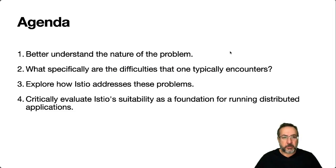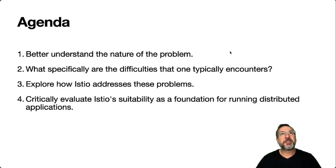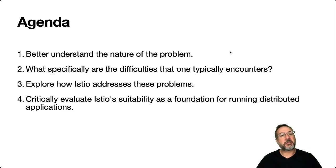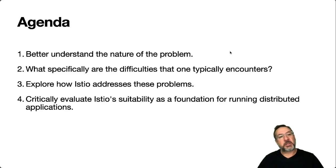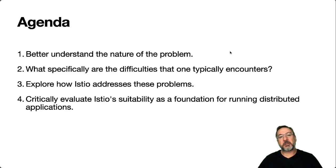Our agenda will be to begin by understanding the nature of the problem — a journey to understand the transition from monolith to microservice, understand the difficulties, and then explore how these difficulties are addressed and how they've been historically addressed. Then we'll transition to looking at Istio, an open source project, and understanding its design and architecture, in order to critically evaluate how suited it is as a foundation for running microservices or distributed applications in general.